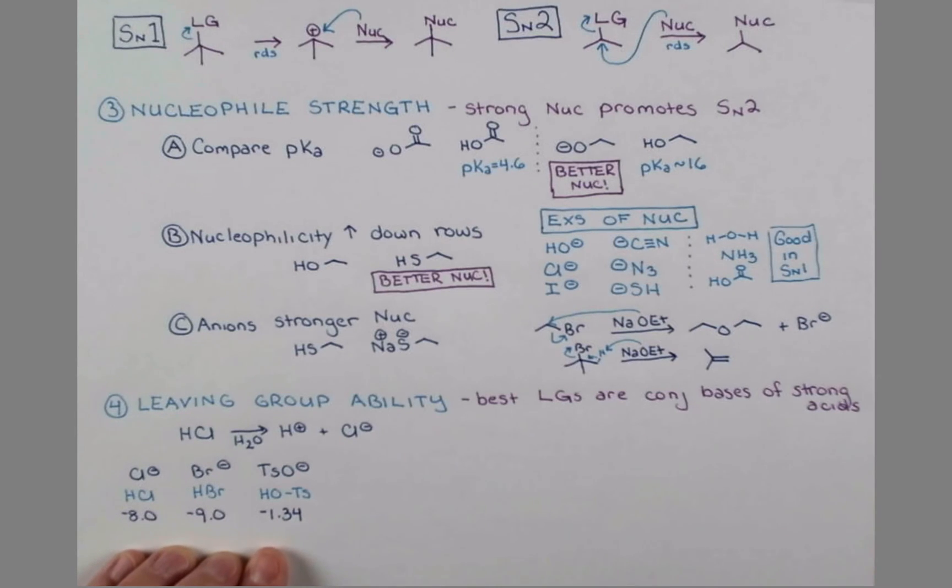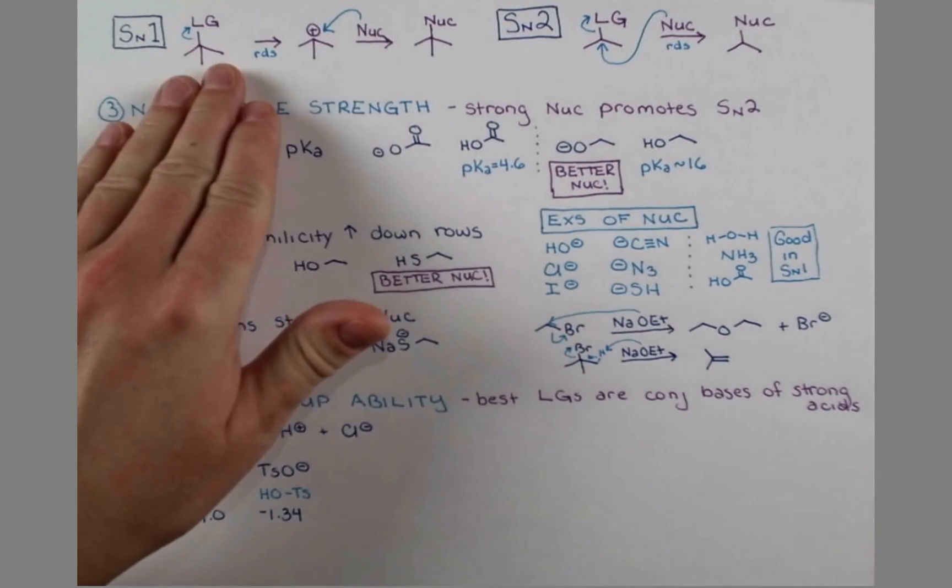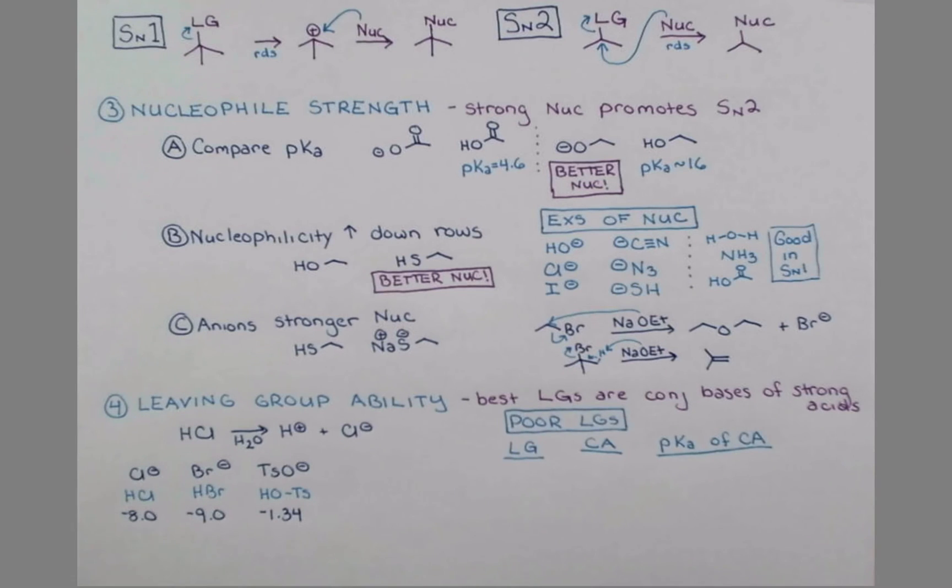Okay, now that we know some good leaving groups, let's look at some poor leaving groups. So we know which groups we should not have on the molecule if we want to do an SN1 or an SN2 reaction. We're going to look at the leaving group, its conjugate acid, and the pKa of that conjugate acid. The first one is hydroxide. OH- rarely acts as a leaving group. Its conjugate acid is water, and that has a pKa of 15.7. NH2- is also a poor leaving group. The conjugate acid is ammonia. With a pKa of 38, we met sodium ethoxide. In fact, all alkoxides are going to be poor leaving groups. The conjugate acid is an alcohol, and alcohols have a range of pKa's hovering around 16.